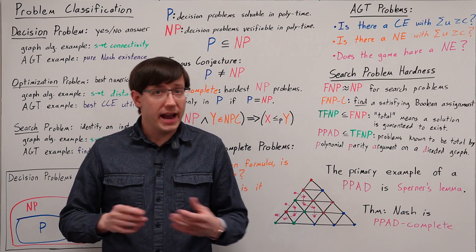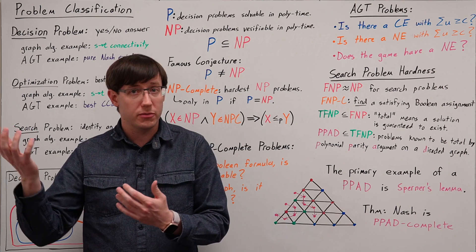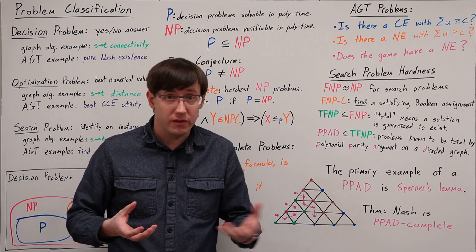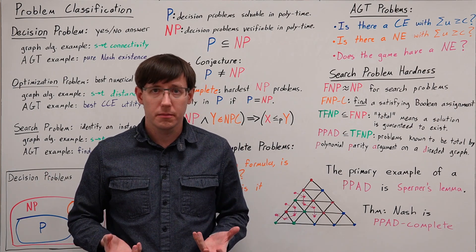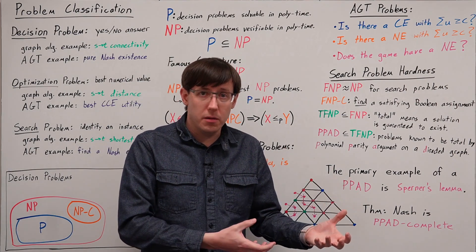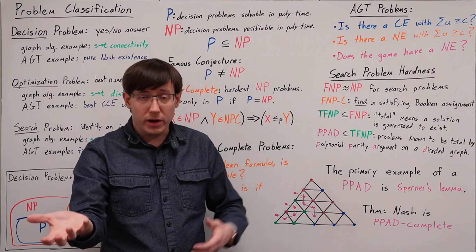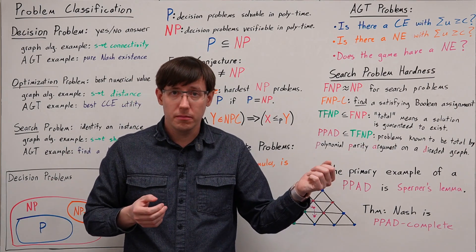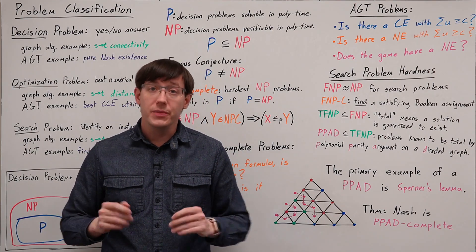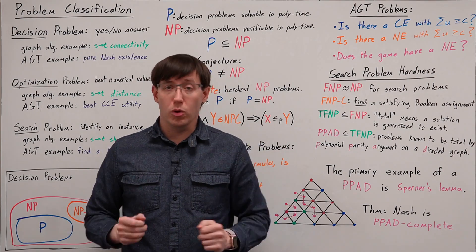For example, if I ask you if a game has a Nash equilibrium where the total utility is above some threshold, that might be hard to solve because we don't know how to efficiently find all of the mixed strategy Nash equilibria. But if the answer is yes, then there must be some equilibrium that proves it, and so you could present me the mixed strategy Nash equilibrium that has high enough utility, and I could write an algorithm to check that nobody has a beneficial deviation and the sum of expected utilities is at least the threshold to verify your proof.